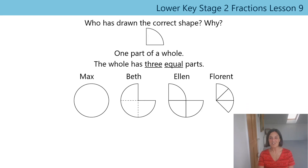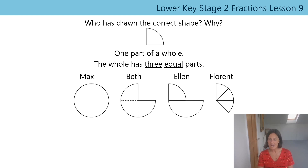Who's ready for a challenge? Now I need you to be the teacher. What I'd like you to do is mark these children's work. They've been given a part — you can see the shape of the part — and they've been told that it is one part of a whole, and that the whole has three equal parts. They've all drawn a different whole, but which ones are correct and which ones are incorrect? If they've got it wrong, can you explain where they went wrong? Pause the video, have a think, and tell someone in your family — or your teddy — what you think.